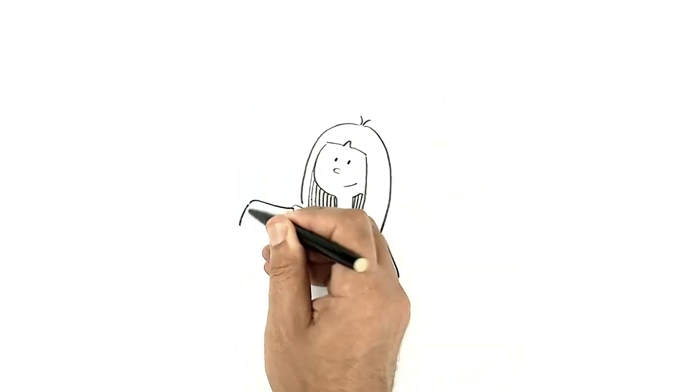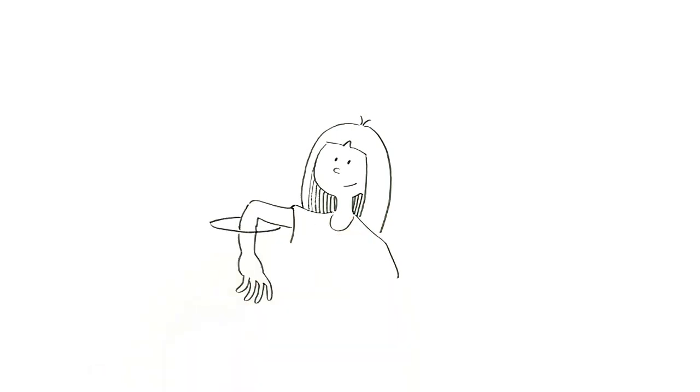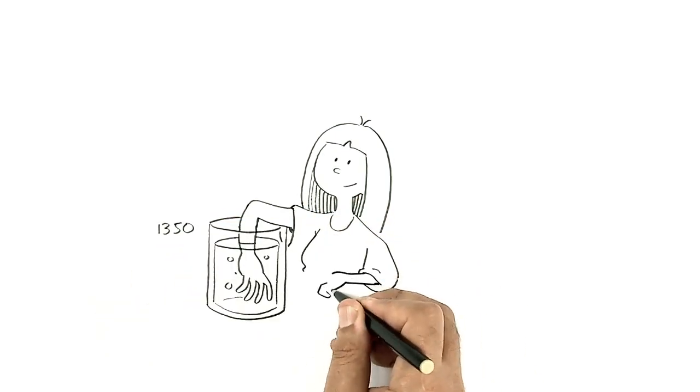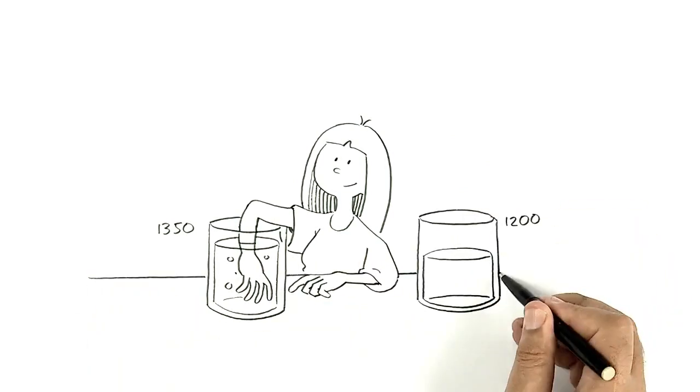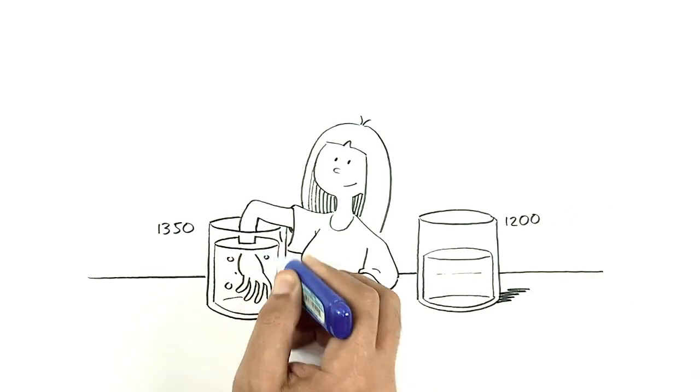When designing learning about capacity and volume, Millie's teacher could begin with a problem. If Millie puts her hand into this jug of water, the water level rises. What could that tell us about Millie's hand?